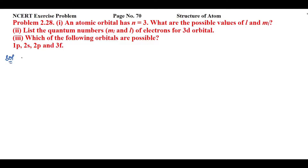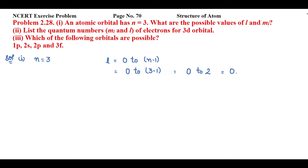In the first part, we have an atomic orbital with n equal to 3, and we have to find the possible values of l and ml. If n equals 3, the value of l will range from 0 to n minus 1, that is 0 to 2. So l can be 0, 1, or 2.